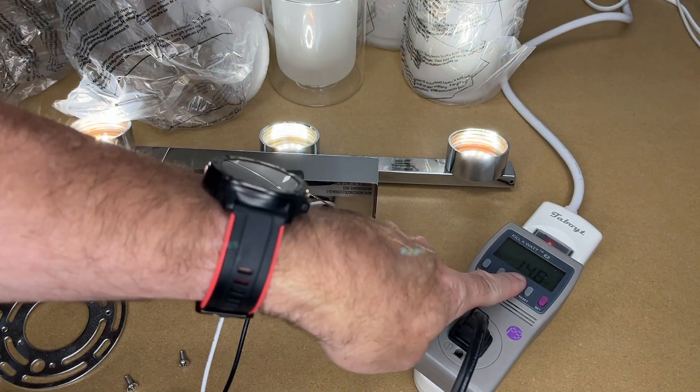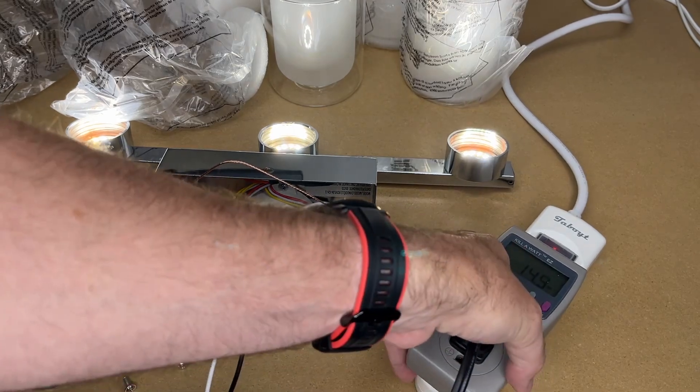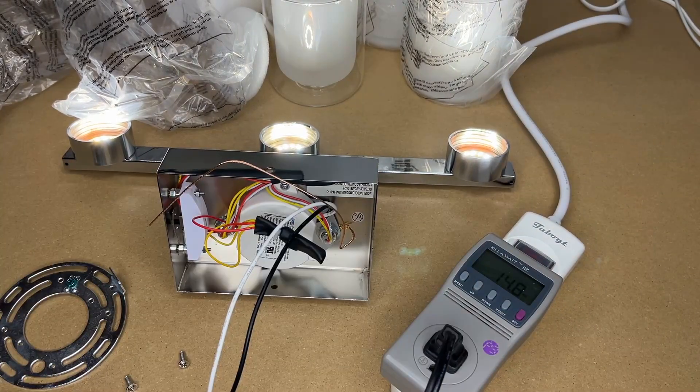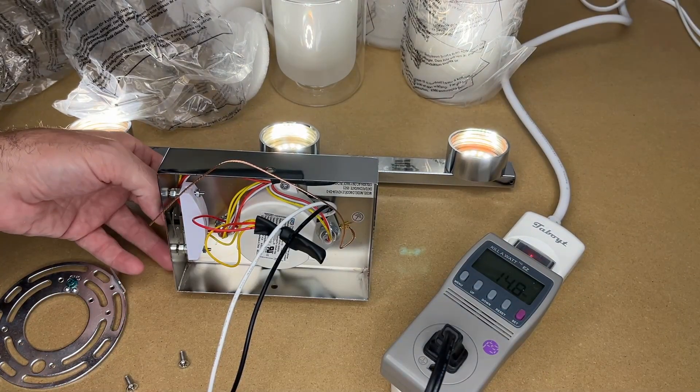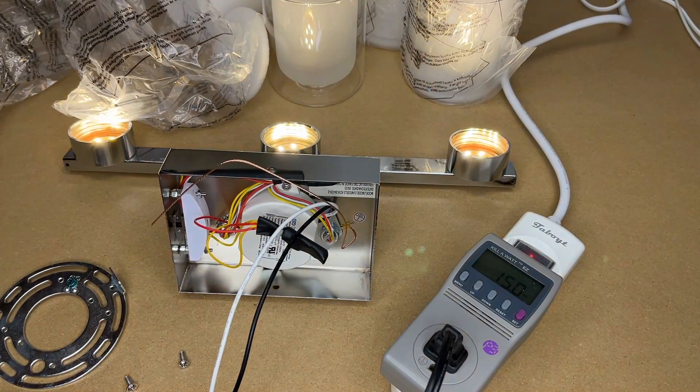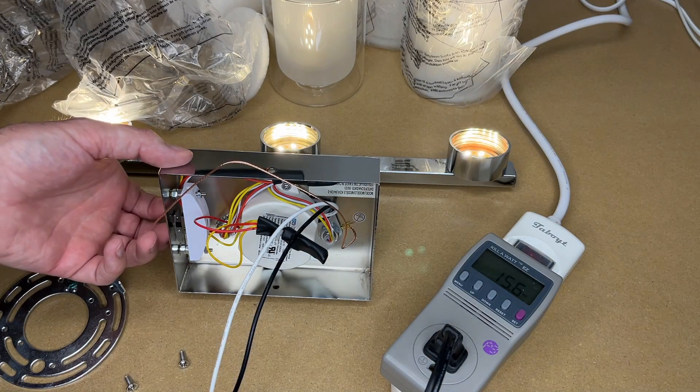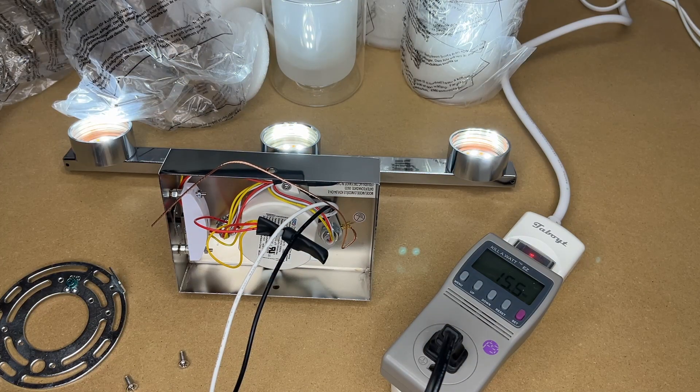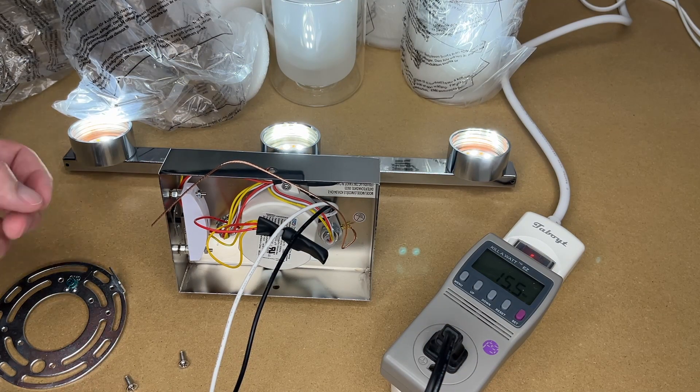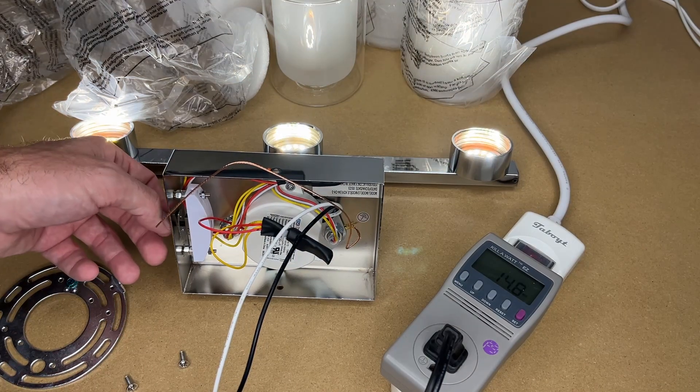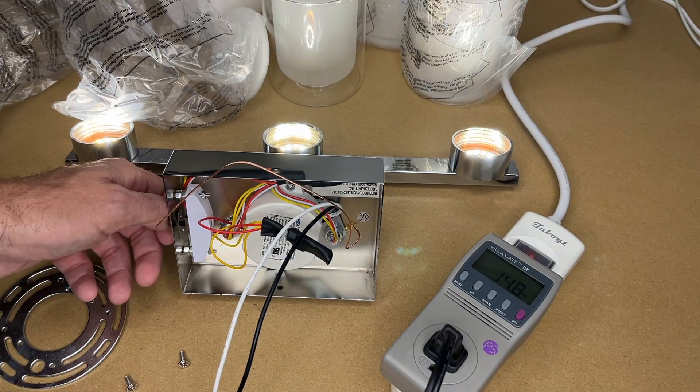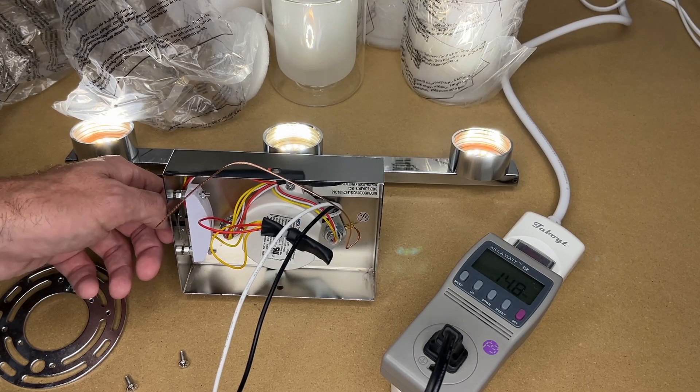Now the light is on. We're currently drawing 14.9 watts at the 4000K temperature. At 3000K we're drawing 15.7 watts. At 5000K we're drawing 15.5 watts. I'm probably going to have it on the 3000K or 4000K, so that'll be the warmer light or the whiter light.